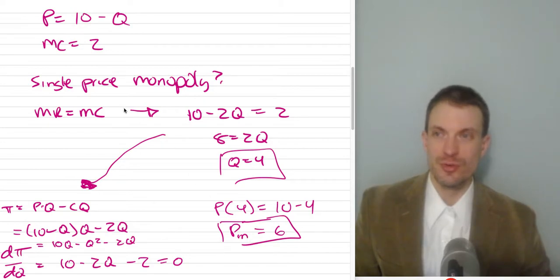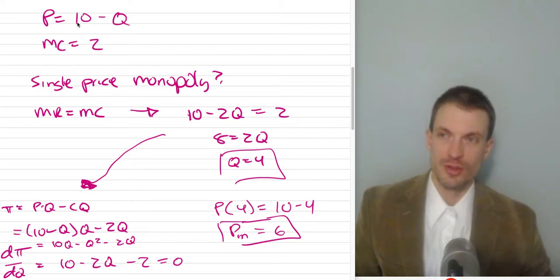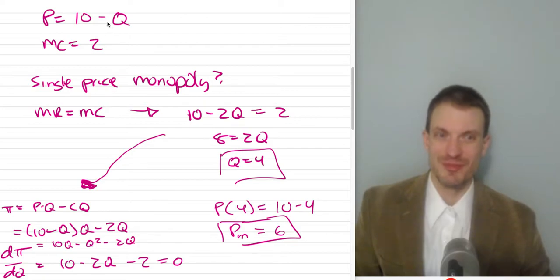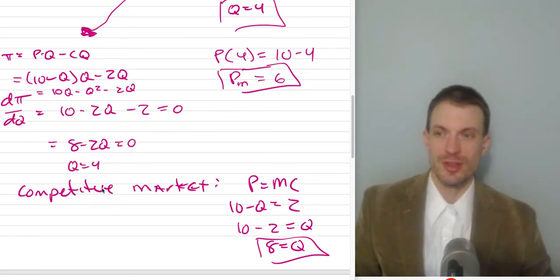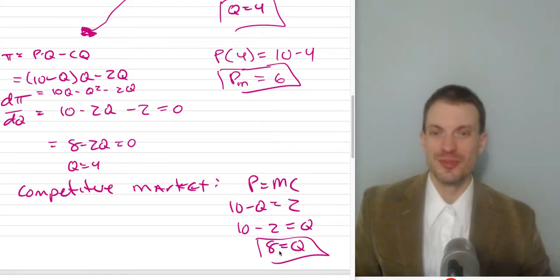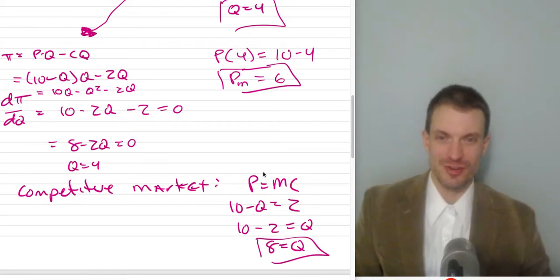What would the competitive market do? The competitive market produces where price equals marginal cost. So I'll set 10 minus Q equal to 2 and solve for Q — it'll be a quantity of 8. What's the price? Prices come from demand curves, so the price is going to be 2. But we knew that already because in the competitive market, the price has to equal marginal cost of 2.